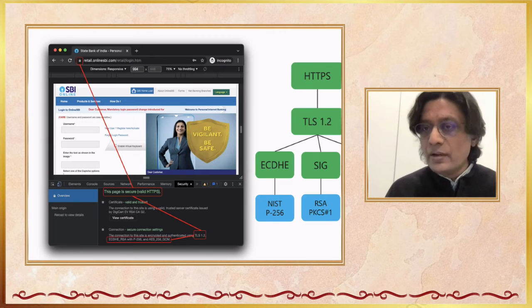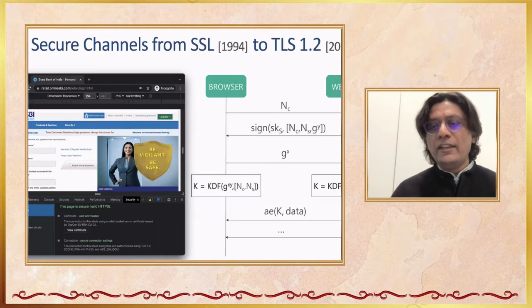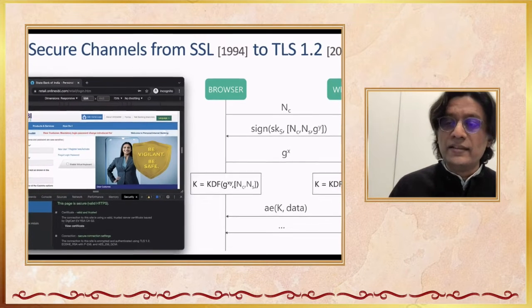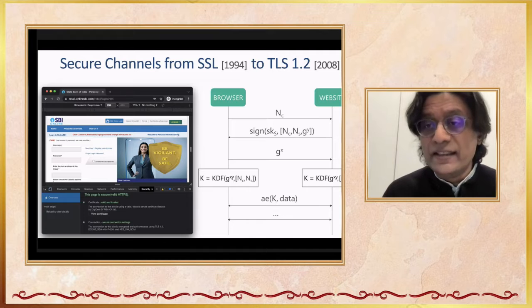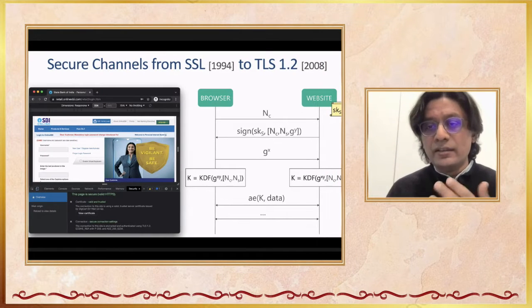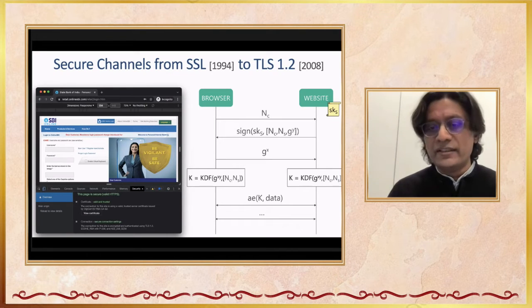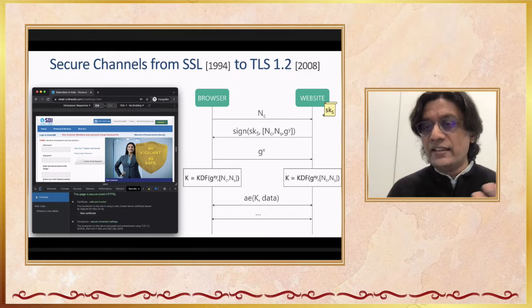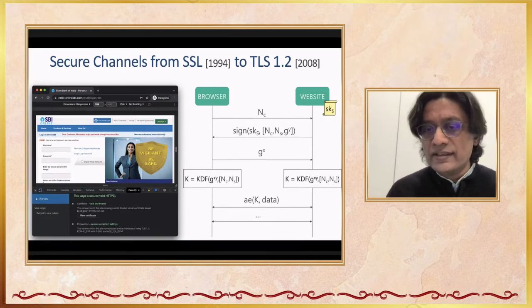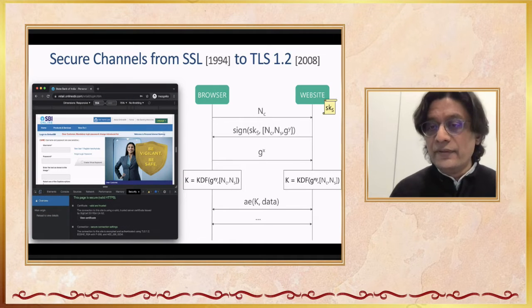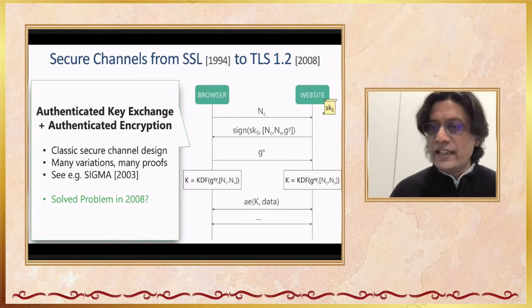If I try to give you a high-level idea of how TLS 1.2 works — and in fact this is how TLS from SSL in 1994 all the way till TLS 1.2 in 2017 used to work — it's very simple. The browser sends a nonce, the server creates a Diffie-Hellman key share g^y and signs that along with a couple of nonces. The client sends its own Diffie-Hellman key share g^x. Both parties can compute g^xy and derive a key, which is used to encrypt data in both directions. It's a very classic secure channel construction — an authenticated key exchange followed by authenticated encryption.